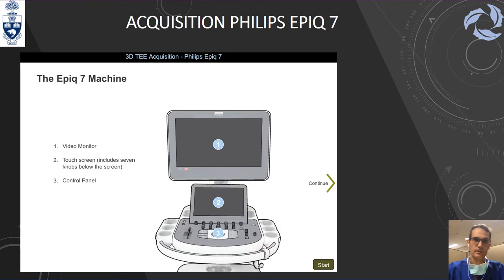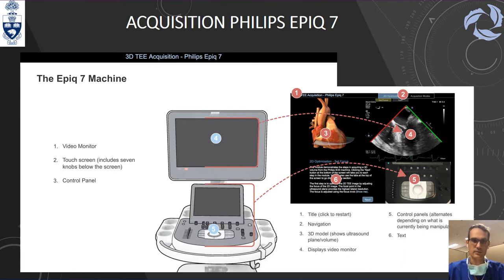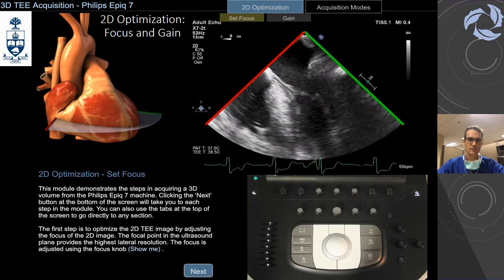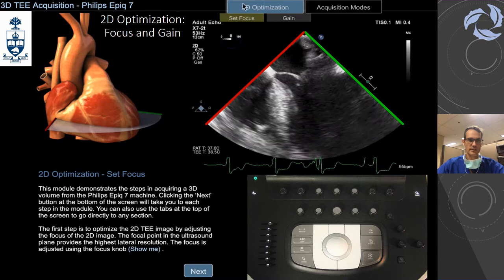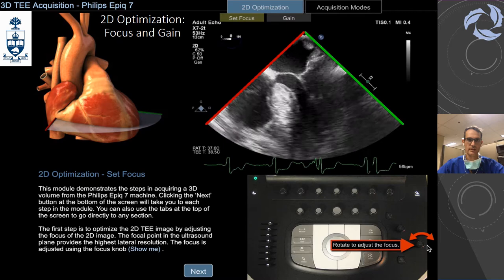The acquisition on the Philips Epic Q7 is the one that we use in most of our cases. You are going to have your video monitor, your touch screen, and your control panel. In the module you are going to be able to get an anatomical 3D mode that you can cut and see the structures. For the Epic, the first thing that we need to do before doing 3D is your 2D optimization.